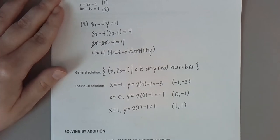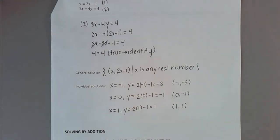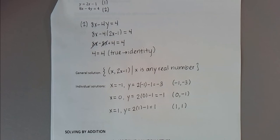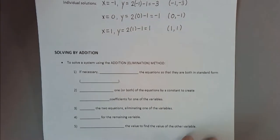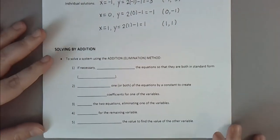Those are the only three situations we encounter with two variables. As we add variables, systems become more complicated graphically, though we solve them the same way. Now let's talk about another way to solve a system: the addition method, sometimes called the elimination method.